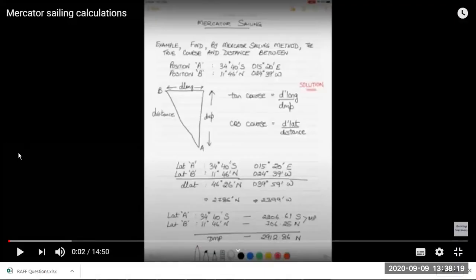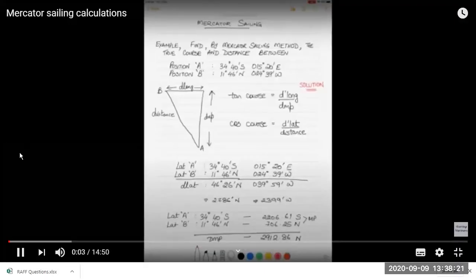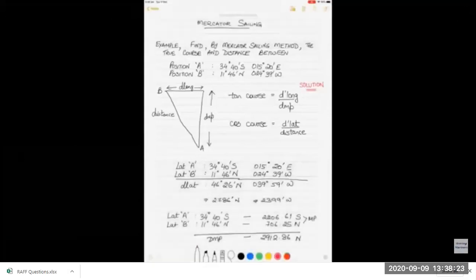Now we are going to do some calculations on Mercator sailing. First example: we have to find by Mercator's method the true course and the distance between two positions. Position A is 34 degrees 40 minutes south and 015 degrees 20 minutes east. Position B is 11 degrees 46 minutes north and 024 degrees 39 minutes west.